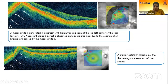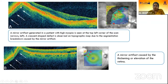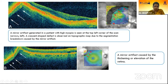In this image we can see a mirror artifact in a high myopic patient; due to extreme curvature, the mirror artifact is seen as indicated by the white arrows. In another scan of a patient with retinal edema, mirror artifact is caused by sudden thickening and elevation of the retina.